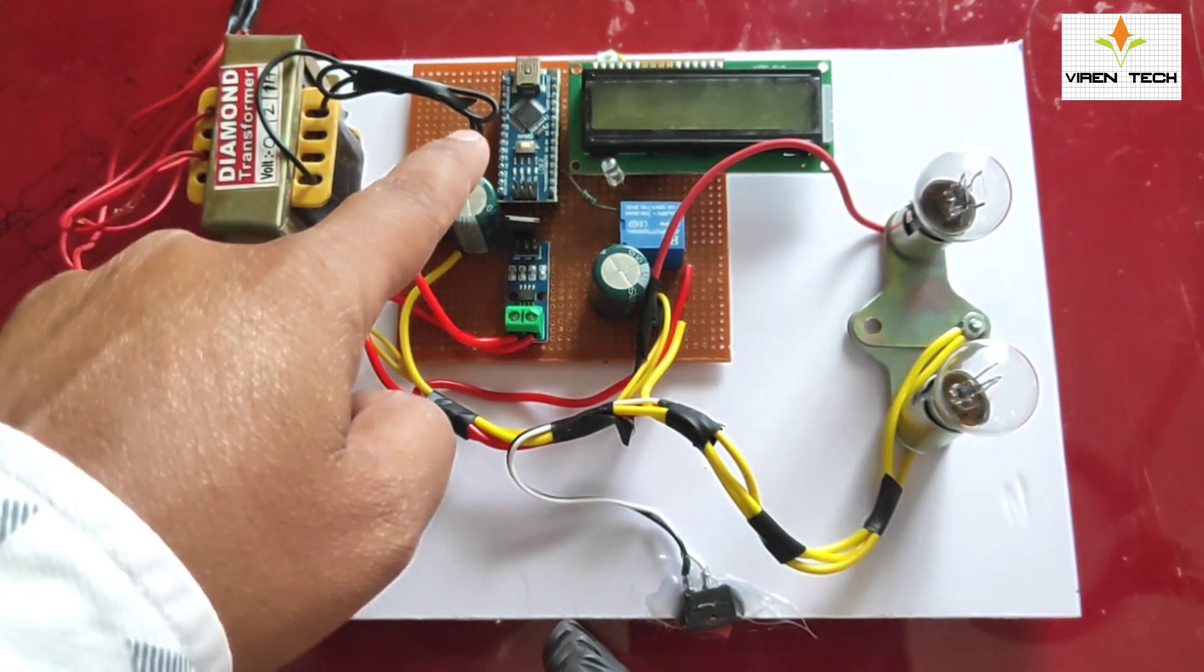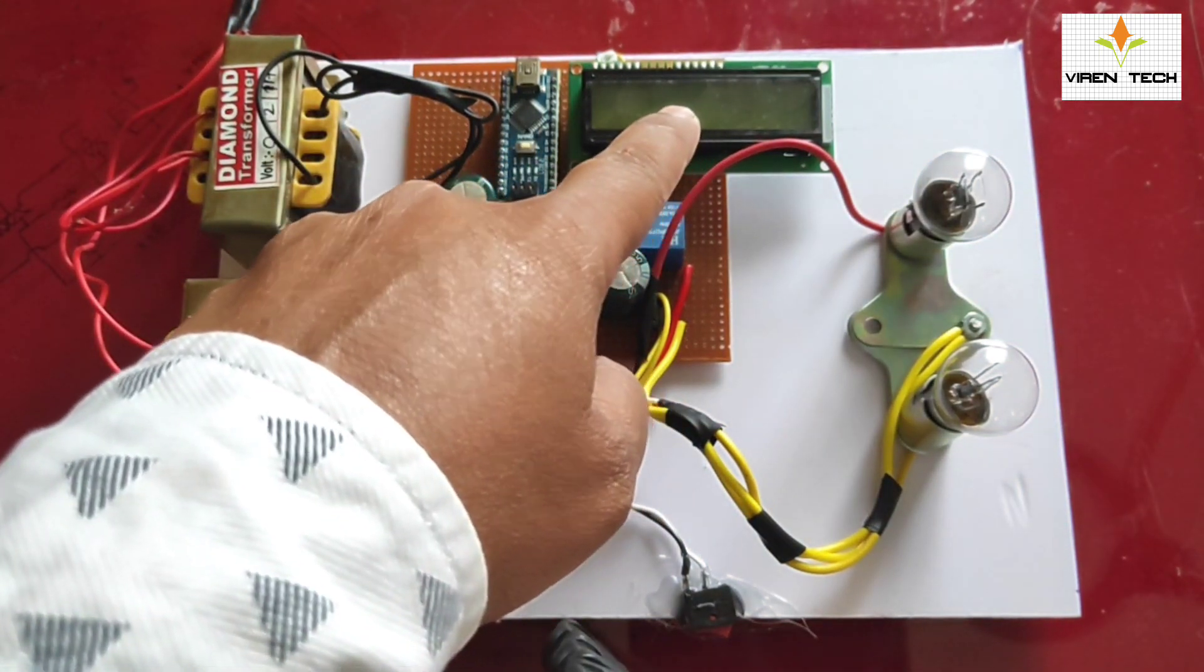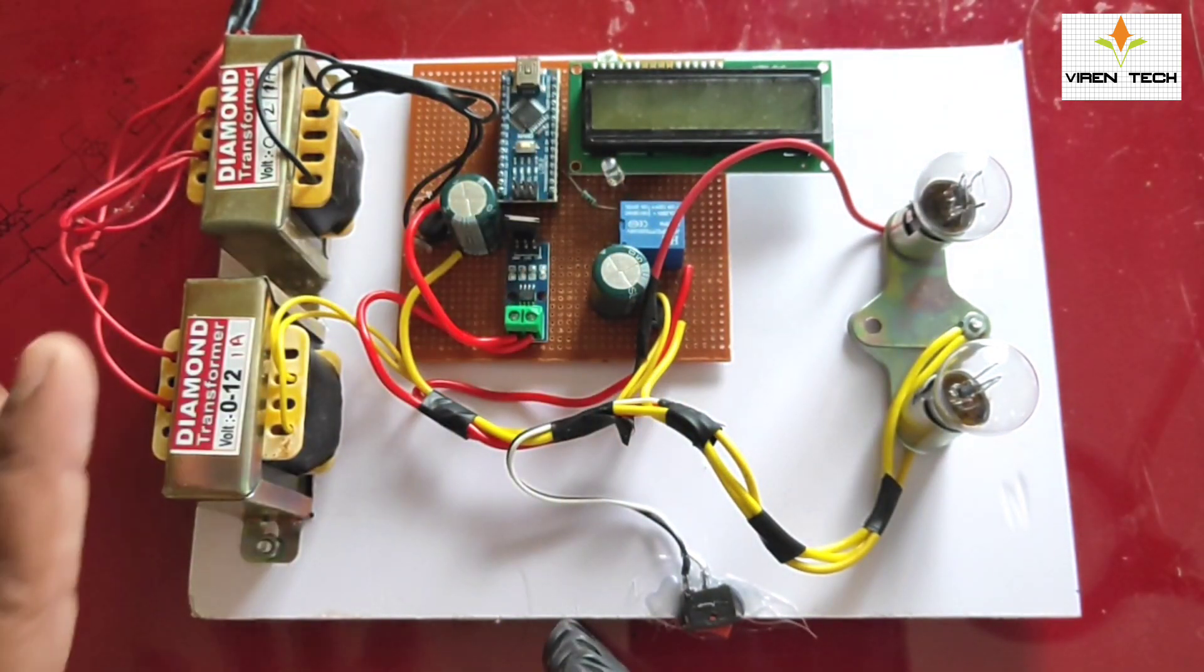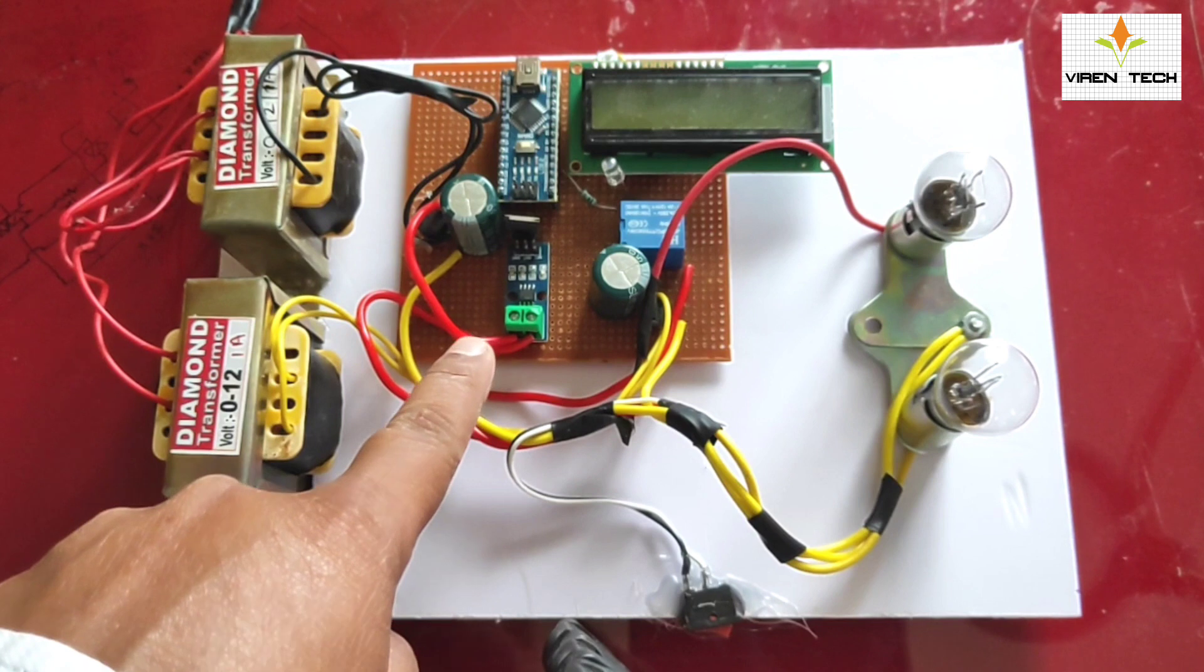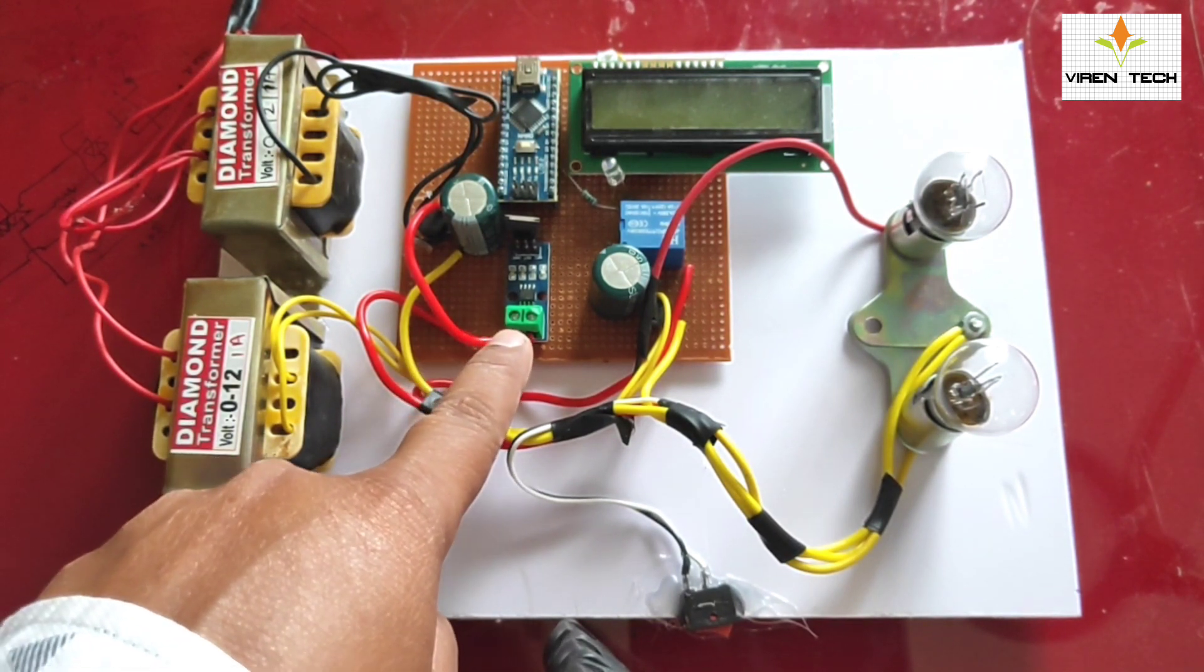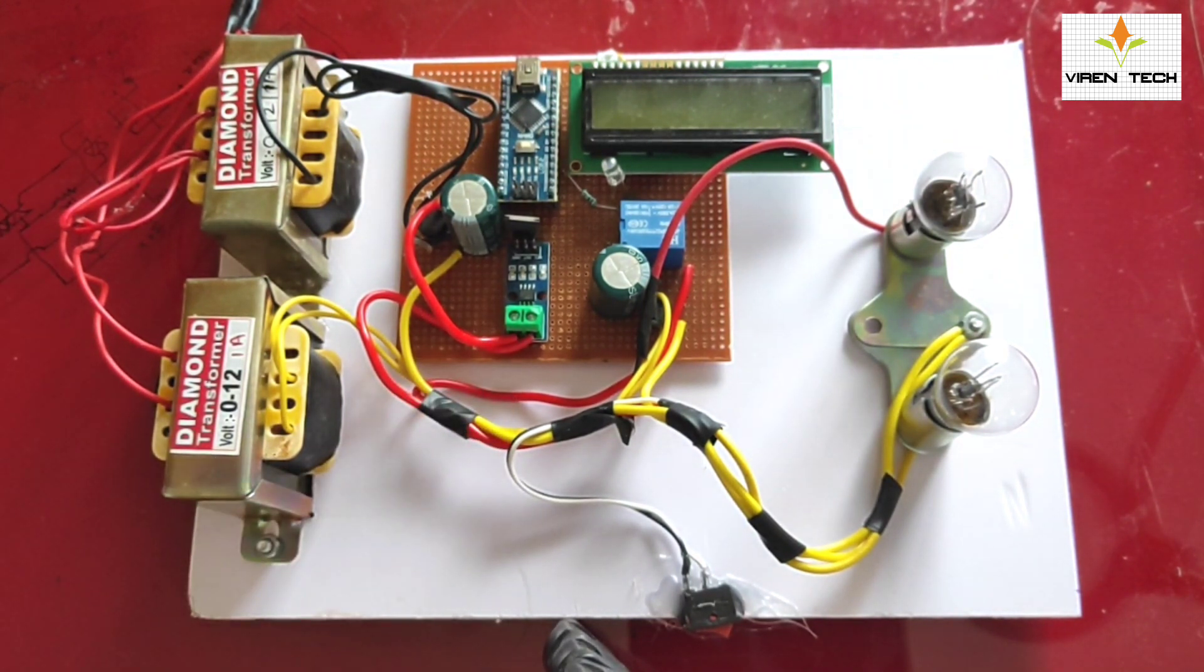We are using Arduino Nano LCD display to display the current status and power consumed by the load. We are going to measure the power by using this current sensor and voltage sensor.